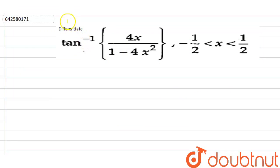Hello everyone, our question is: differentiate tan inverse of 4x over 1 minus 4x square, in the interval minus one-half to one-half.